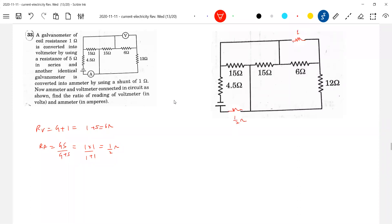1 by 2 ohm and this will be 6 ohm. So this 6 ohm, 6 ohm.